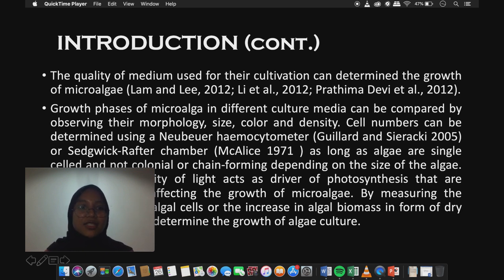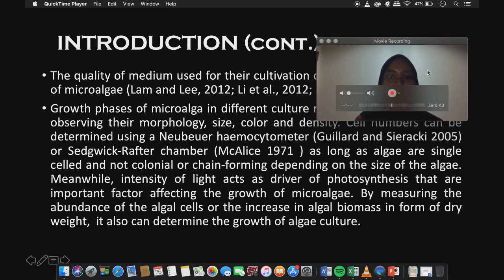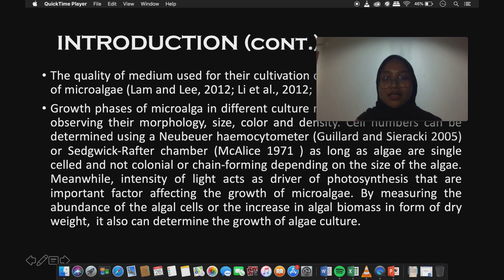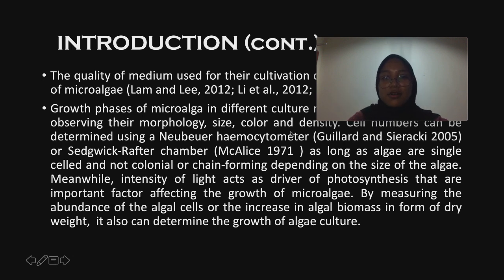Cell numbers can be determined using a hemocytometer or Sedgwick-Rafter chamber, as long as algae are single cell and not colonial or chain forming, depending on the size of the algae. Meanwhile, intensity of light acts as a driver of photosynthesis and is an important factor affecting the growth of microalgae, measured by the abundance of algae cells or the increase in algae biomass in the form of dry weight. It can also determine the growth of algae content.